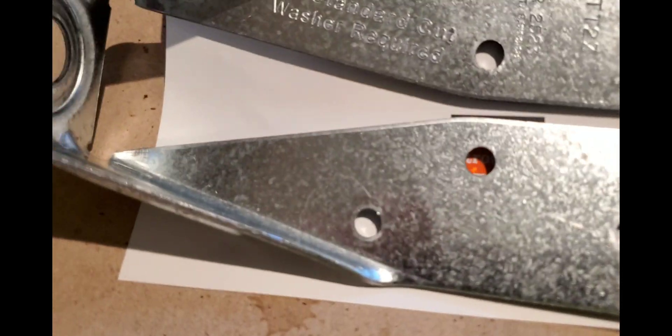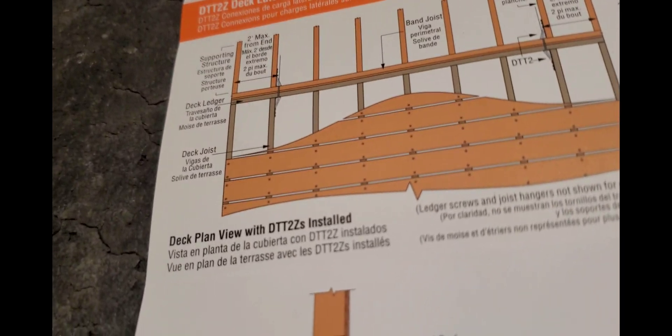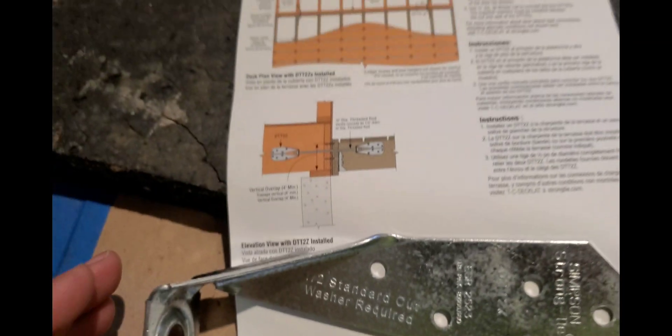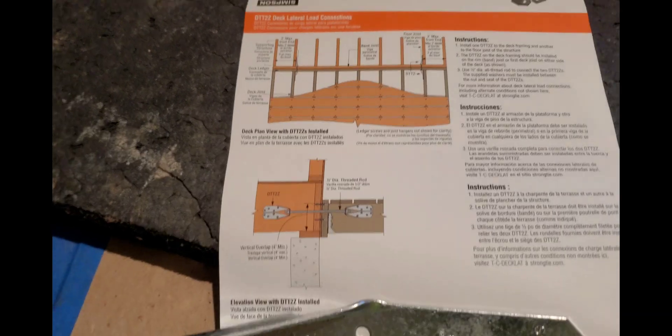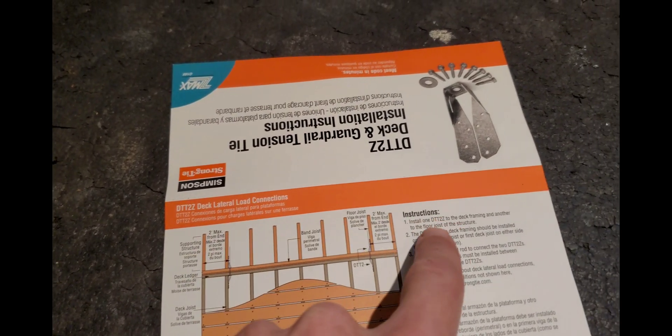We're going to be adding lateral support with the DTT 2Z. We actually have to come back since the joists are perpendicular, we have to go back two bays.